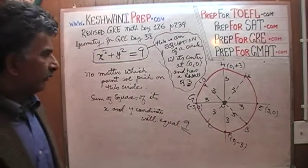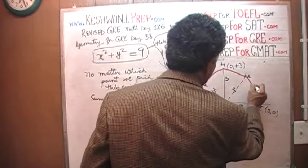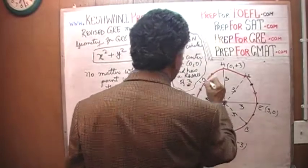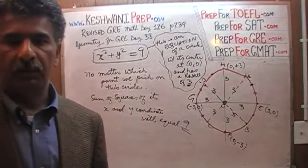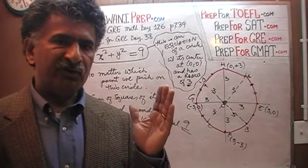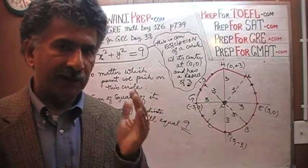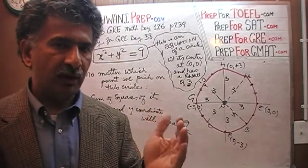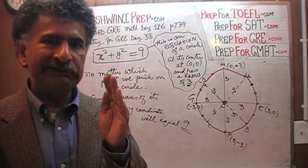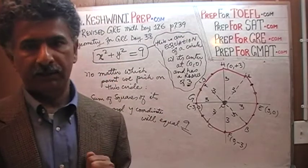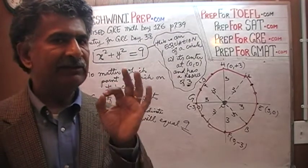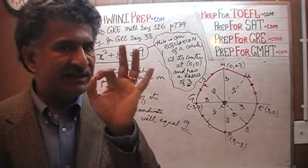No matter what point we pick on this circle, the sum of the squares of its x and y coordinates will equal 9. There are infinite points on this circle, and any point on it — when you square and add its x and y coordinates — will always equal 9. That tells us the radius of this circle is 3 and it is sitting precisely at the origin.